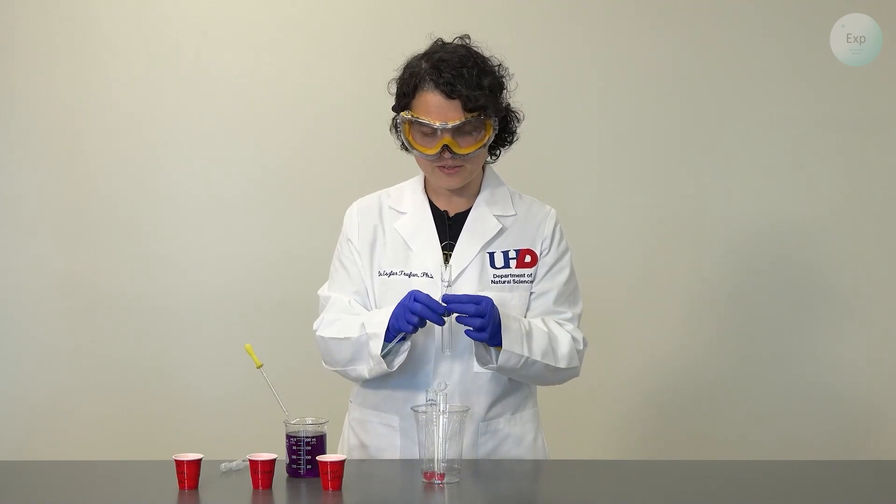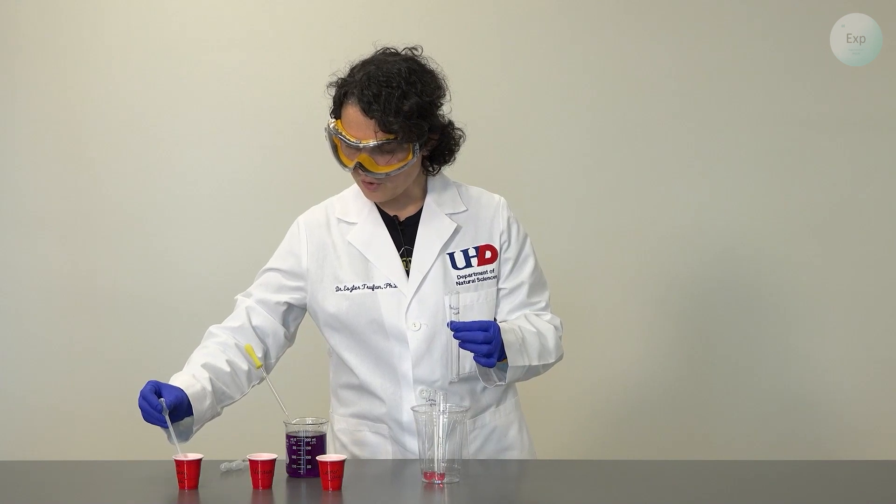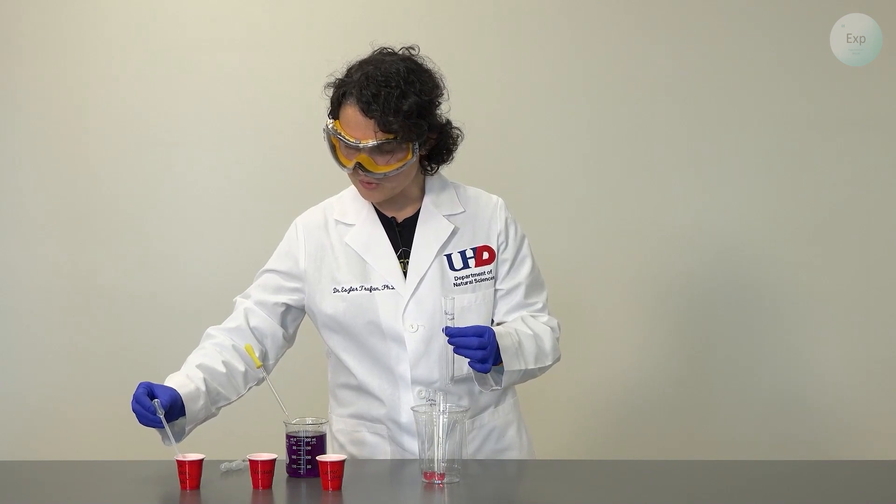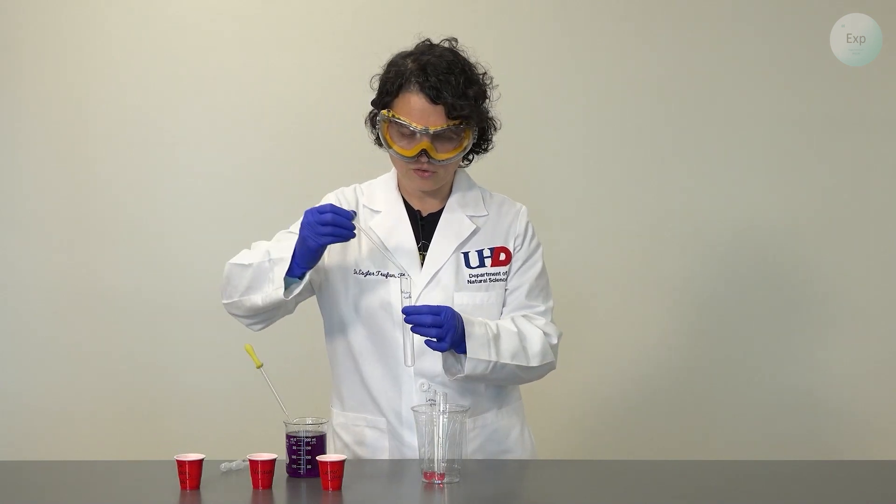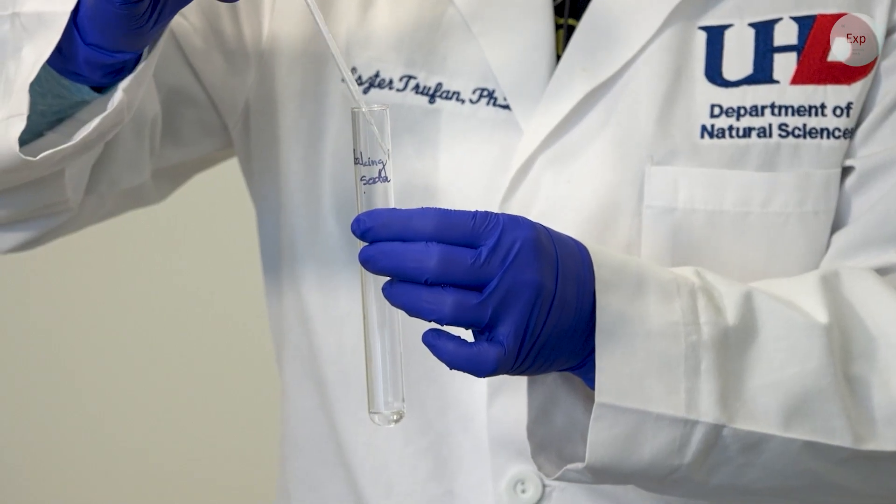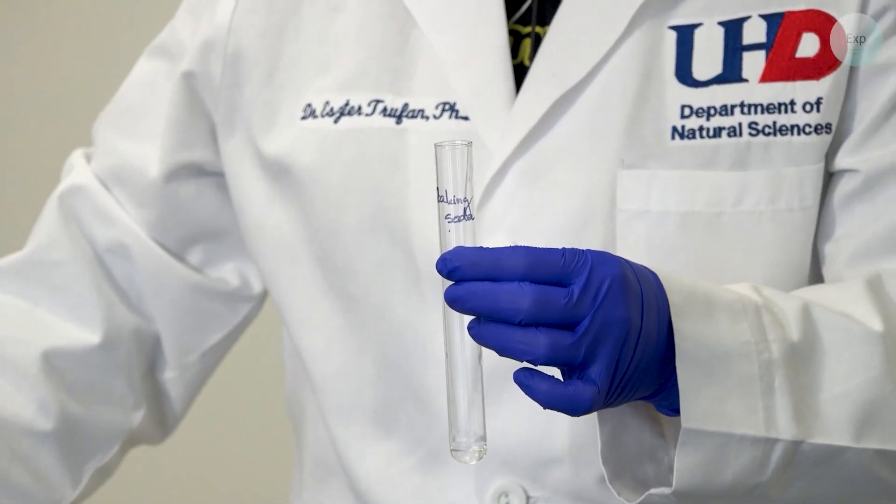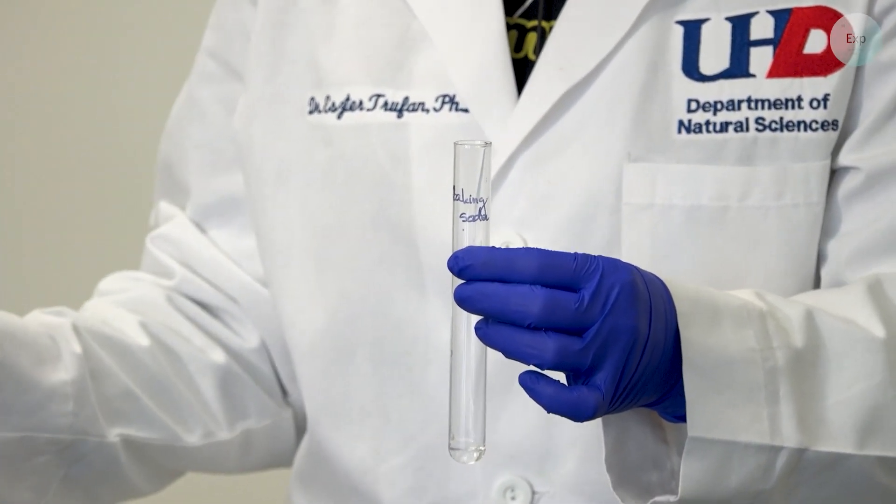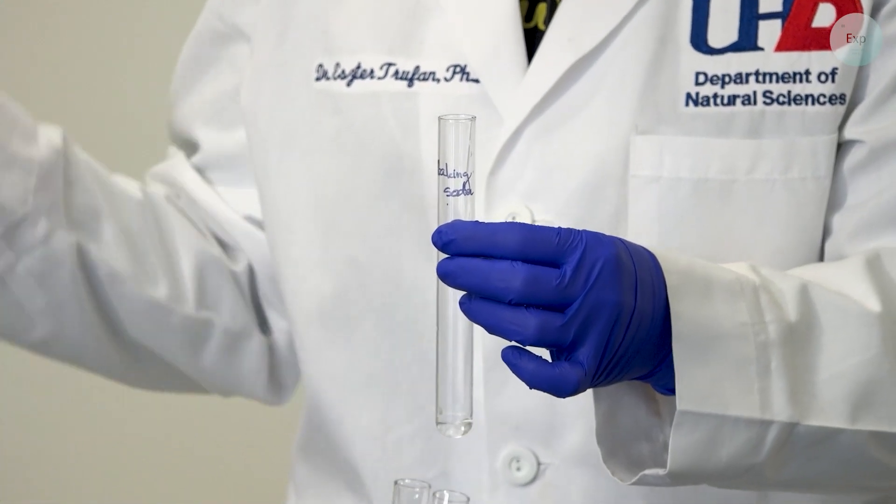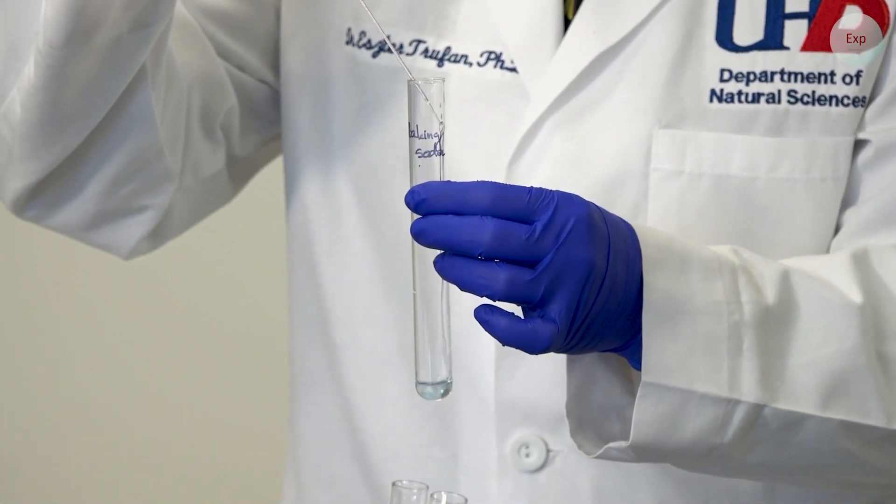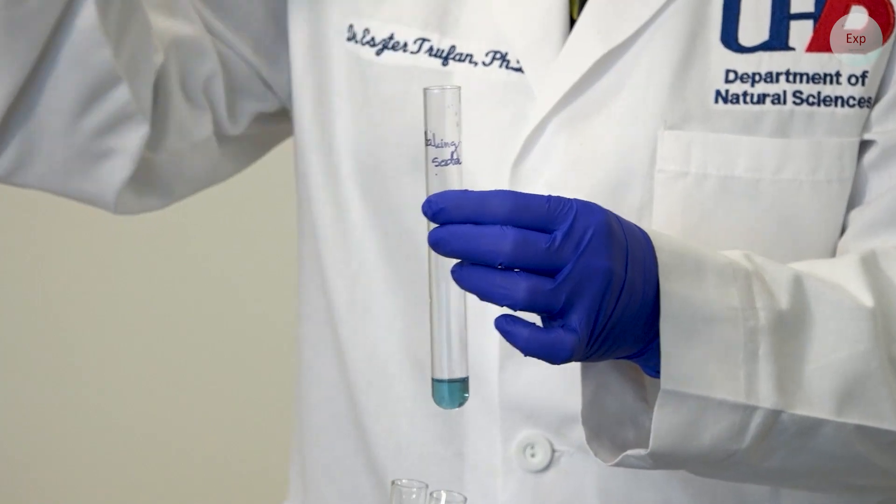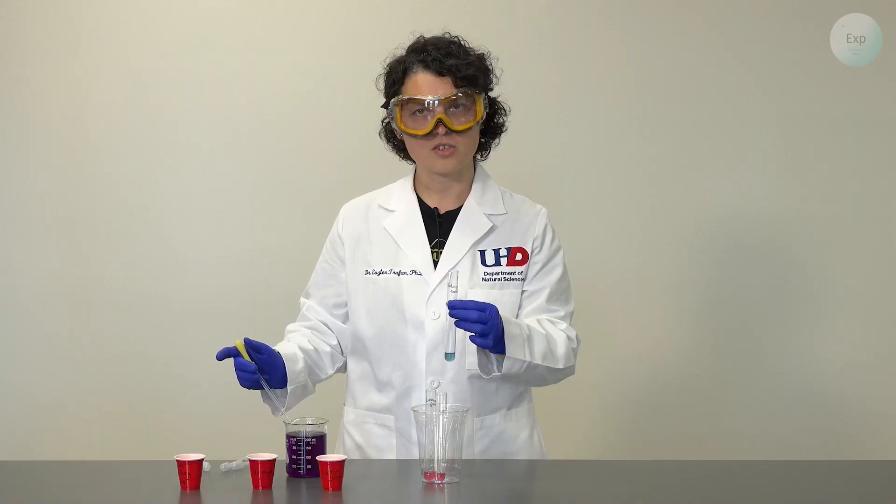Finally, I am going to test the baking soda solution. I will draw up some of my saturated baking soda in my pipette, transfer it to the test tube, and then transfer the indicator solution into it. And it changed color yet again.